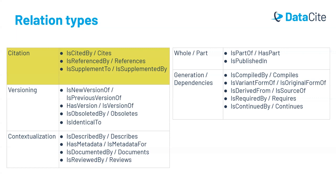The relations in the versioning category are usually applied to different manifestations of the same object. These include: is new version of, is previous version of, has version, is version of, is obsoleted by, obsoletes, and is identical to. The contextualization relations are applied to related objects that provide additional information to the object, like documentation, reviews, and technical specifications. These include: is described by, describes, has metadata, is metadata for, is documented by, documents, is reviewed by, and reviews.